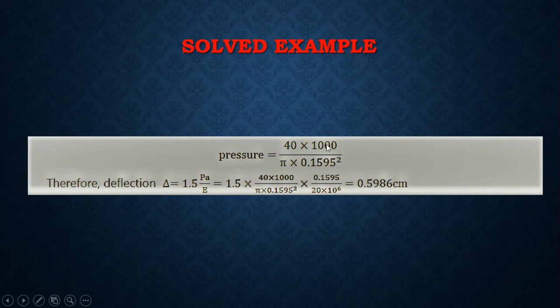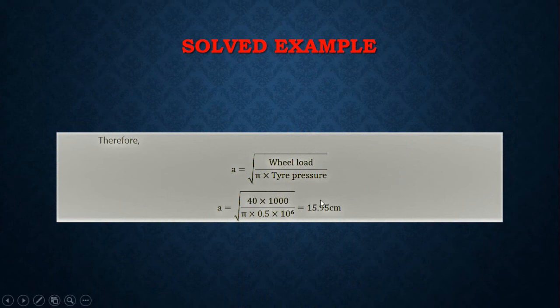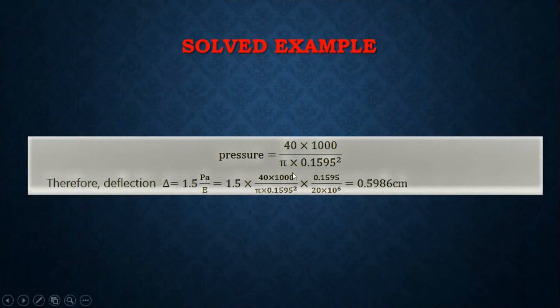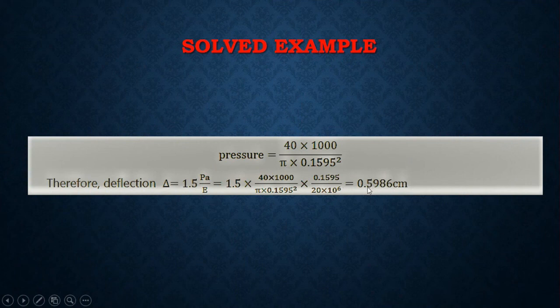Substituting the values: 1.5 times the pressure (from wheel load 40 kilonewtons times 1000, divided by pi times 0.1595 squared) times a, which is 0.1595 meters, divided by the elastic modulus of 20 million newtons per meter square (20 times 10 to the power of 6). This gives a deflection value of 0.005986 meters, which converting to centimeters equals 0.5986 centimeters. This is the end of the tutorial — thank you for watching, and please subscribe.